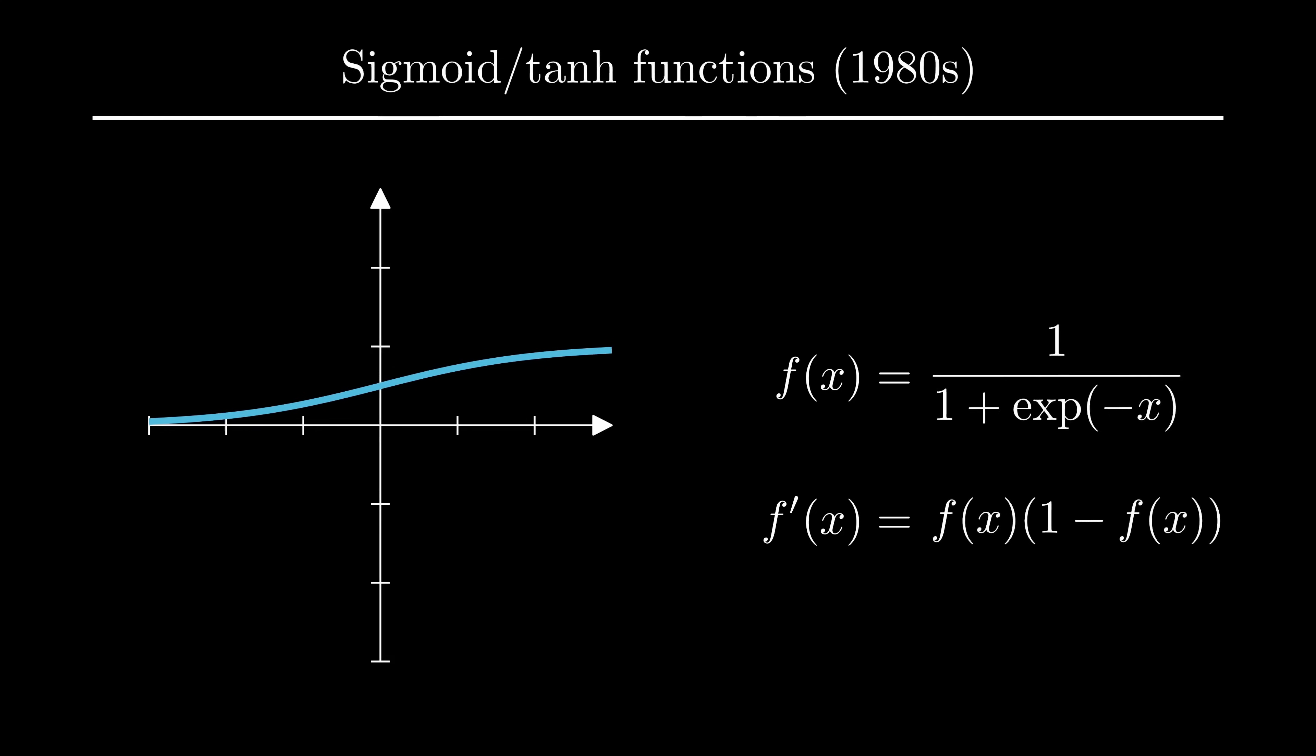Also, they are differentiable everywhere and therefore suitable for gradient learning. Tanh especially, because it is zero-centered, which helps convergence.